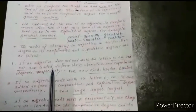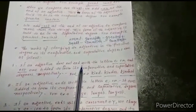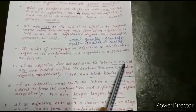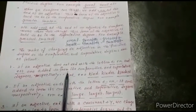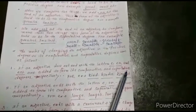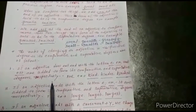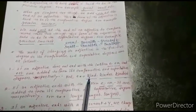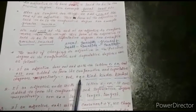Number 1: If an adjective does not end with the letter E, add ER and EST to form its comparative and superlative degrees respectively. For example: kind → kinder → kindest.